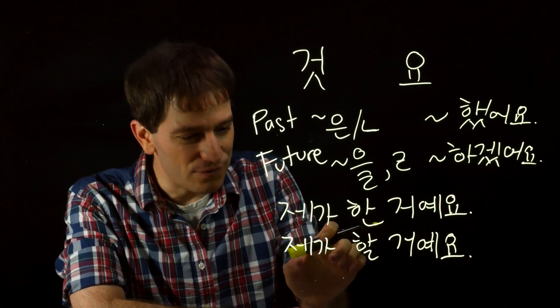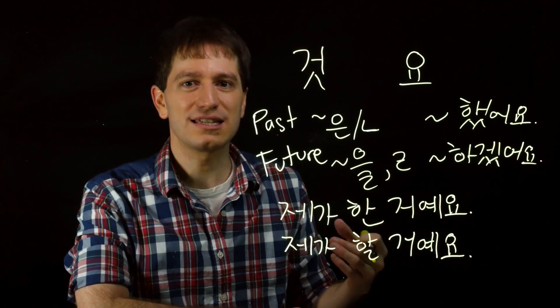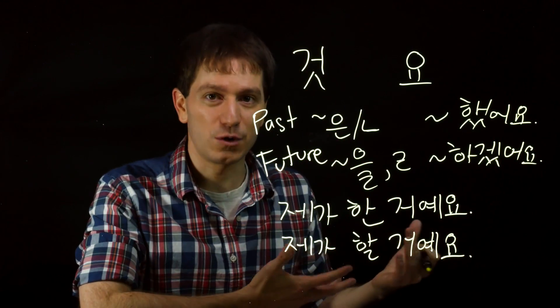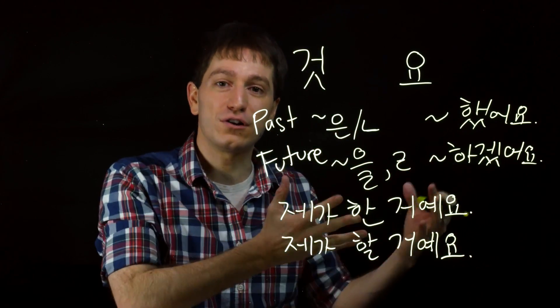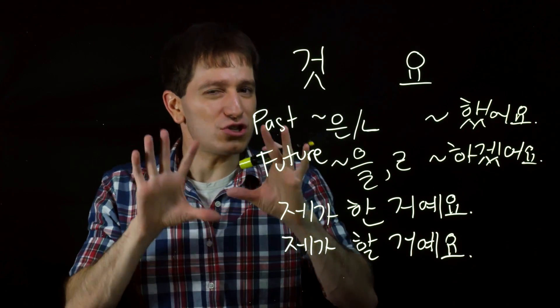This also has slightly more emphasis on I, I will do it, 제가 할 거예요, versus 제가 하겠습니다, or whatever verb you want to do, which would be more emphasis on the verb, I will do it. Again, this difference is very small, so don't stress about it.